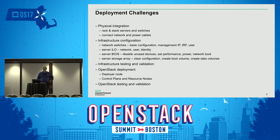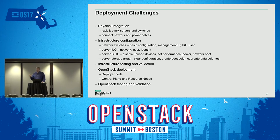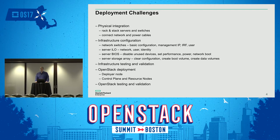This slide covers the deployment challenges. We wanted to take hardware that was physically connected together with no prior configuration and use automation to deploy all infrastructure configurations as well as OpenStack. The phases included: physical integration done by another part of the factory; infrastructure configuration covering top-of-rack switches — both data and management switches — server Integrated Lights-Out (iLO) management processors, server BIOS, and storage array configuration.